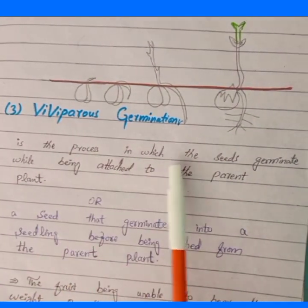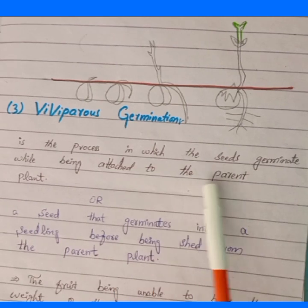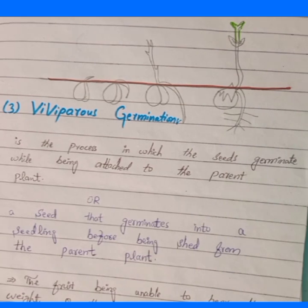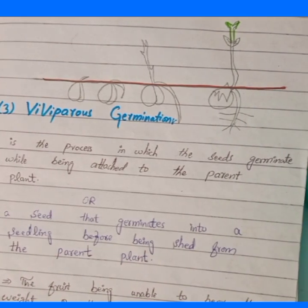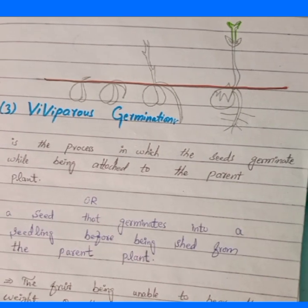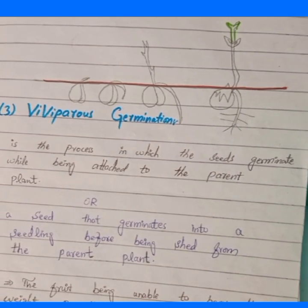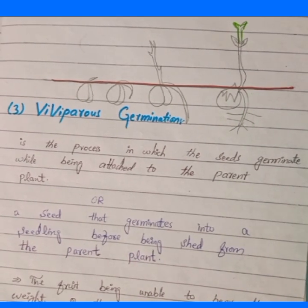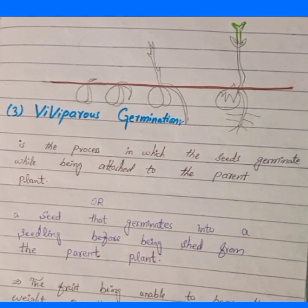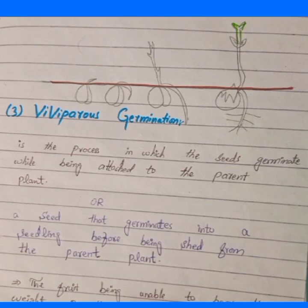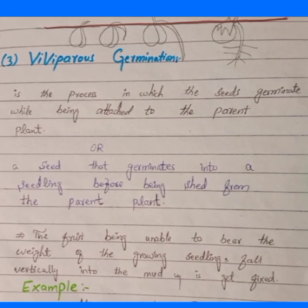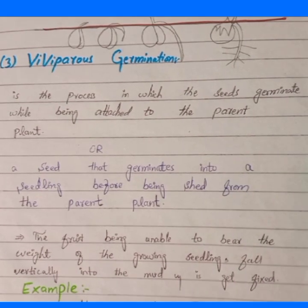Viviparous germination is the process in which seeds germinate while being attached to the parent plant, or a seed germinates into a seedling before being shed from the parent plant. The seed remains inside the fruit, still attached to the parent plant, and begins germination. If it were shed from the fruit, there would be less chance of survival, so the seed germinates in place under stress conditions.